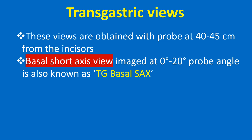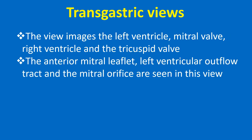Transgastric views are obtained with the probe at 40-45 cm from the incisors. The basal short axis view is imaged at 0-20 degrees, also known as TG Basal SAX. The view images the left ventricle, mitral valve, right ventricle, and tricuspid valve. The anterior mitral leaflet, left ventricular outflow tract, and mitral orifice are seen in this view.